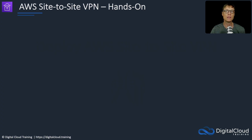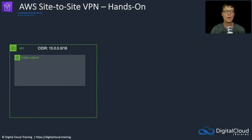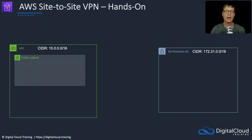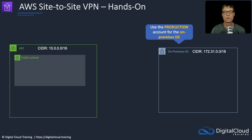This is going to be the topology that we create. We have a VPC, and then we have an on-premises data center. Of course, we don't actually have an on-premises data center, so what we're going to do is use our second account to simulate the on-premises data center.